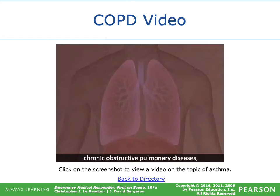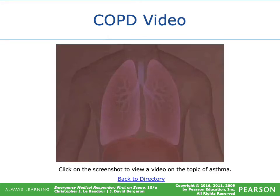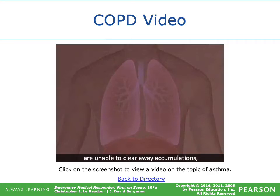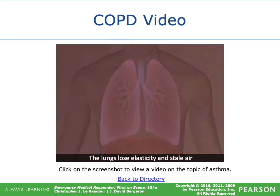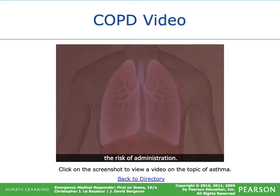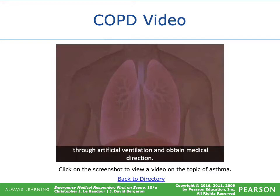Emphysema and chronic bronchitis are chronic obstructive pulmonary diseases affecting mainly middle-aged or older patients, where tissues react to smoking, pollutants, or repeated infections. In chronic bronchitis, the bronchial lining is inflamed, excess mucus forms, and damaged cilia can't clear it. In emphysema, the walls of the alveoli break down, reducing surface area, and the lungs lose elasticity, trapping stale air laden with carbon dioxide. Care for all respiratory conditions is similar — do not withhold oxygen, monitor constantly, assist ventilation if breathing becomes inadequate, and obtain medical direction.